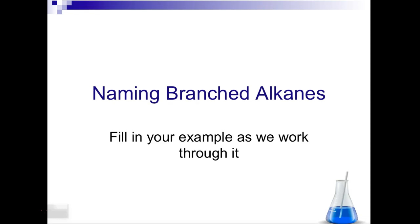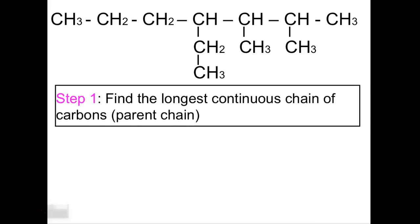So naming branched alkanes, you're going to fill in your example as we work through it. So this is your hydrocarbon chain. First thing you do is you've got to find the longest continuous chain of carbons. That's what we call the parent chain. So the long carbon chain is going to be up top.